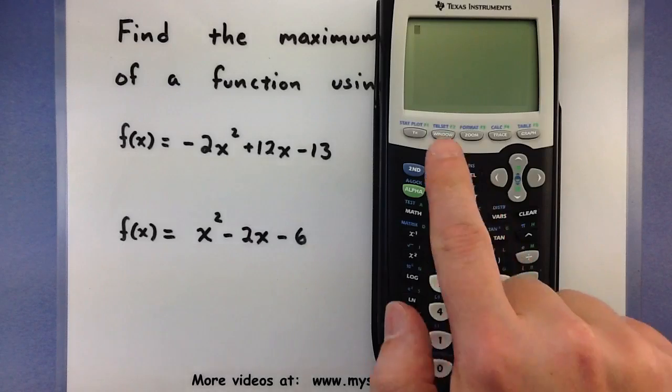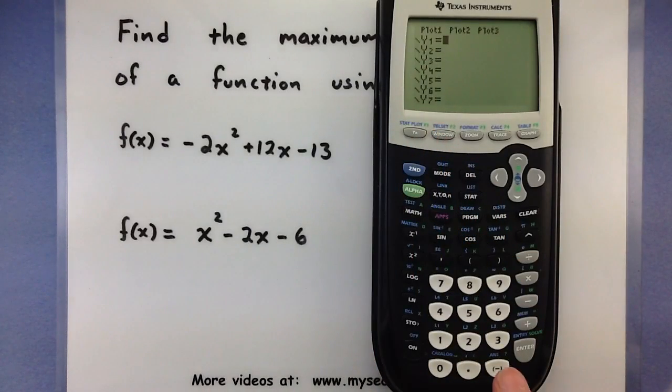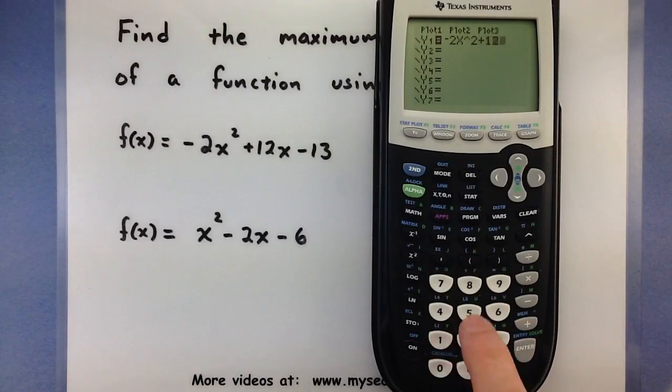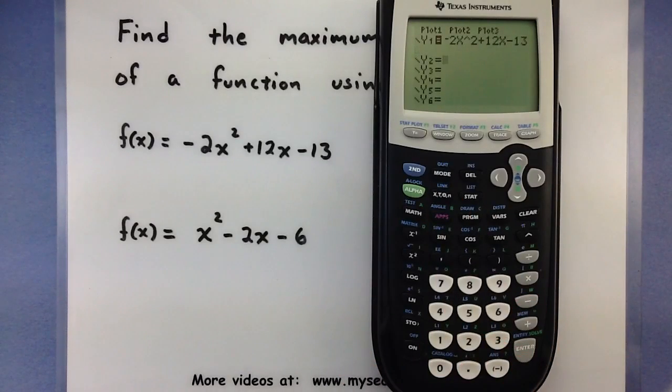The very first thing is to go to your y equals screen and go ahead and put these functions in, so -2x² + 12x - 13, enter. Looks good.